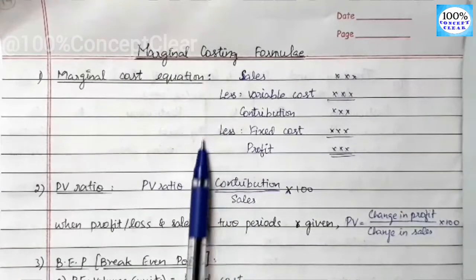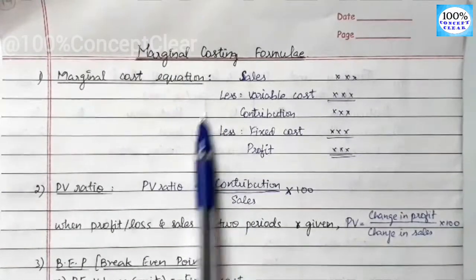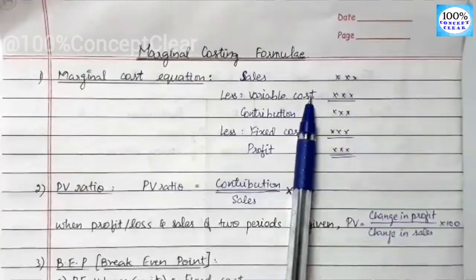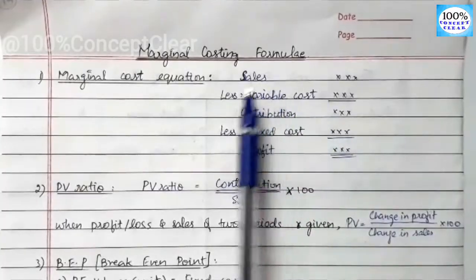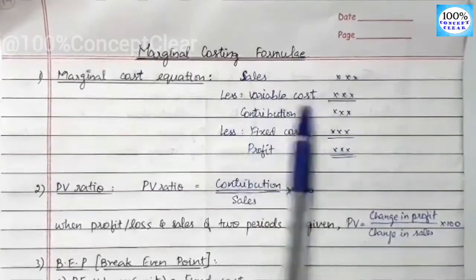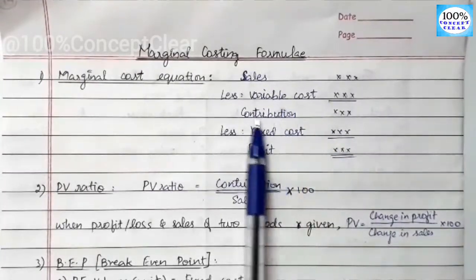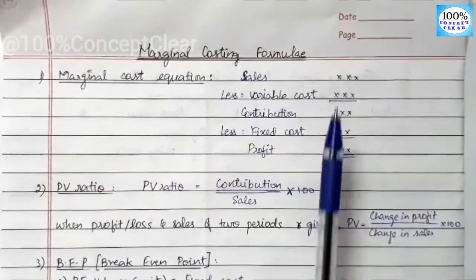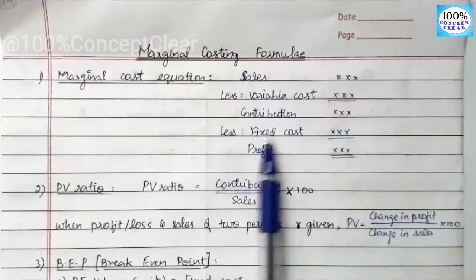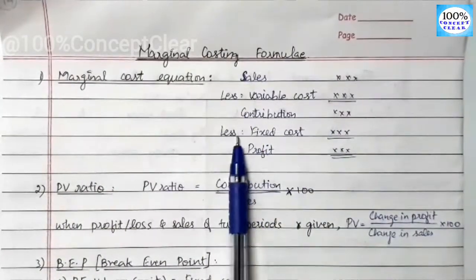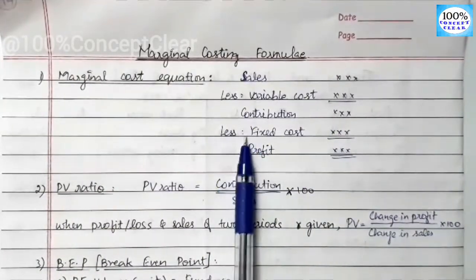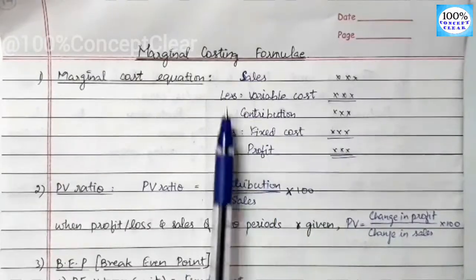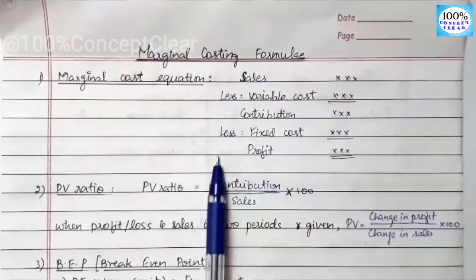The basic Marginal Costing equation is: Sales minus Variable Cost equals Contribution. Then, from Contribution, we subtract Fixed Cost to get Profit.